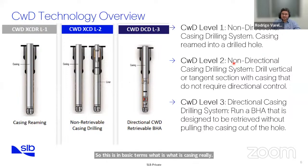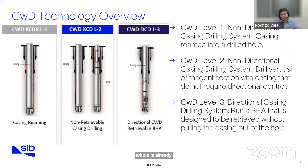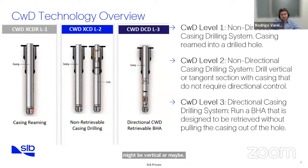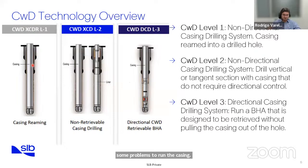There are three different types of casing while drilling technology. Level one is the most typical that all operators use — the hole is already drilled, either vertical, tangential, or directional, and then you run the casing with a casing bit or a rimmer shoe. This is used whenever you have some tight spot or problems running the casing, so you prefer casing rimming to reach total depth without any problem.